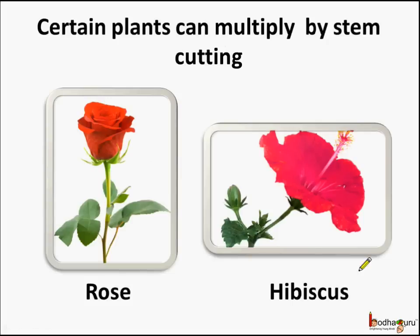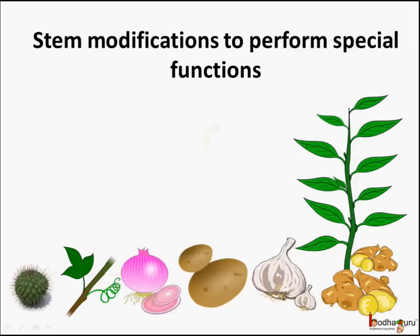So if we plant the stem cuttings we get a new plant, for example in the case of rose and hibiscus. Now let us see the stem modifications which are there to perform special functions.